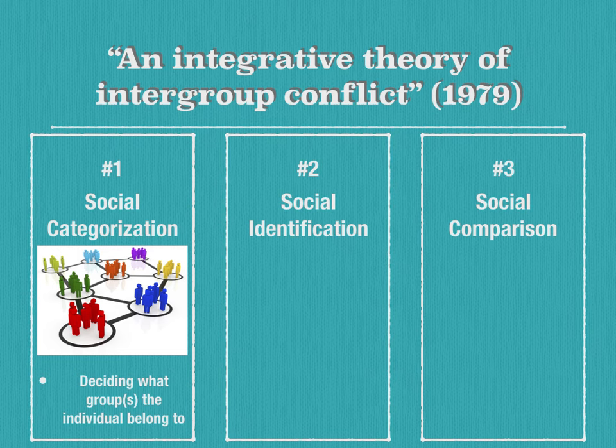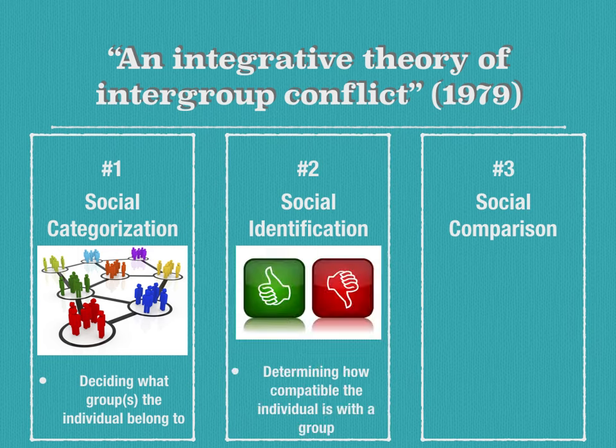Once this cognitive process of social categorization is complete, the next cognitive process begins, which is social identification. In social identification, an individual determines how compatible they are with the group. They have to make sure that they fit in within the norms of the group to see if they should join. Once they identify with the group, they develop an emotional significance that their self-esteem then depends on.